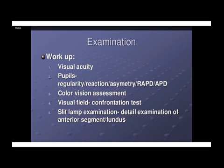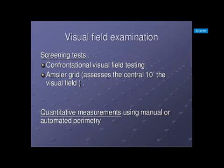In examination, we work up the patient with visual acuity testing, pupillary light reactions — there may be asymmetry or a relative afferent pupillary defect — color vision assessment, visual field confrontation test, and slit lamp examination. Screening can be done by confrontational visual field testing or the Amsler grid test, which assesses the central 10 degrees of the visual field. Quantitative measurements can also be done using manual or automated perimetry.